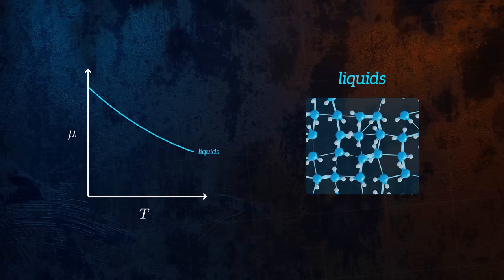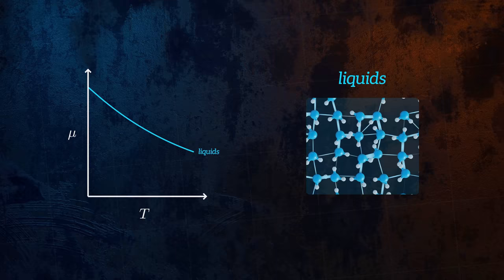The viscosity of water, for example, reduces from 1 centipoise at 20 degrees Celsius to 0.5 centipoise at 50 degrees Celsius.